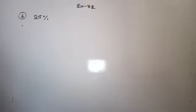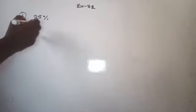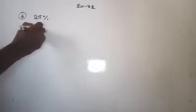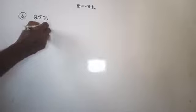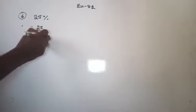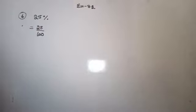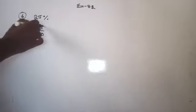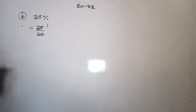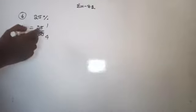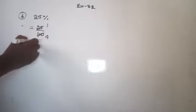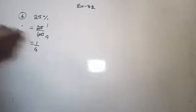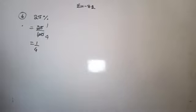1% means 1/100, and A% means A/100. So 25% can be written as 25 × 1/100, that is 25/100. Now reduce into the lowest form. 25 goes into 25 once, and 25 goes into 100 four times. That is equal to 1/4.